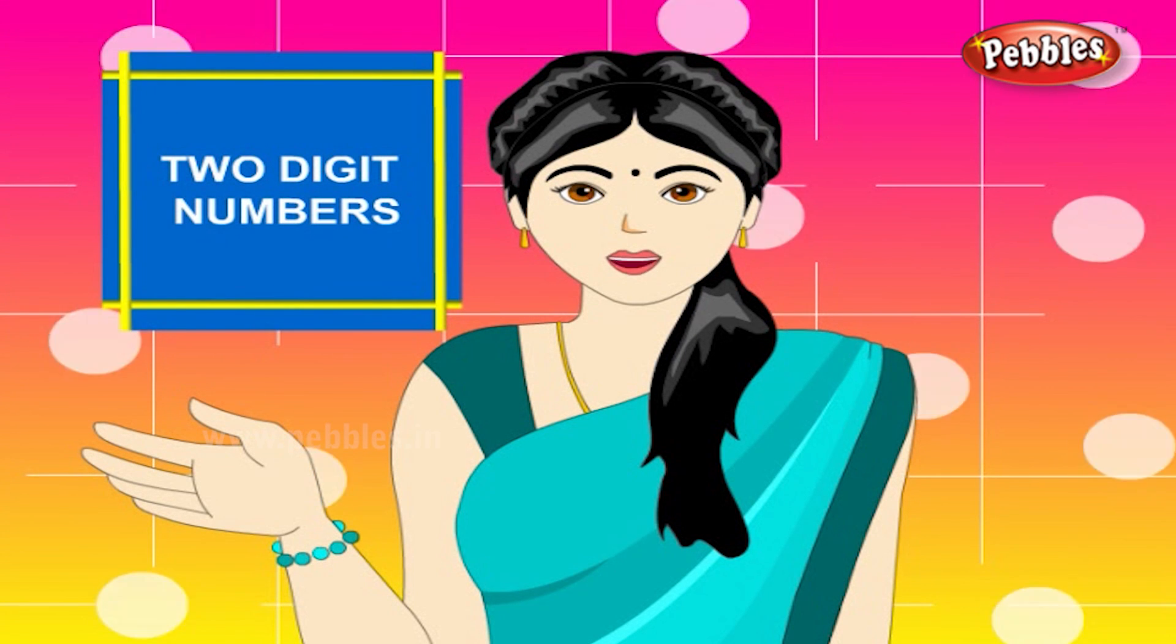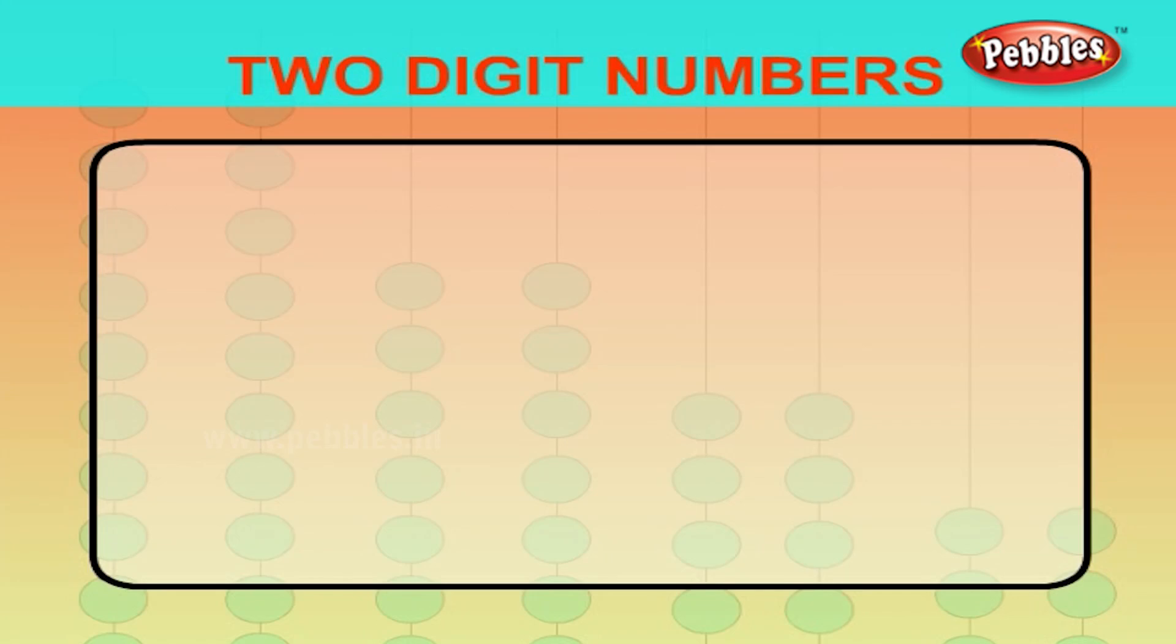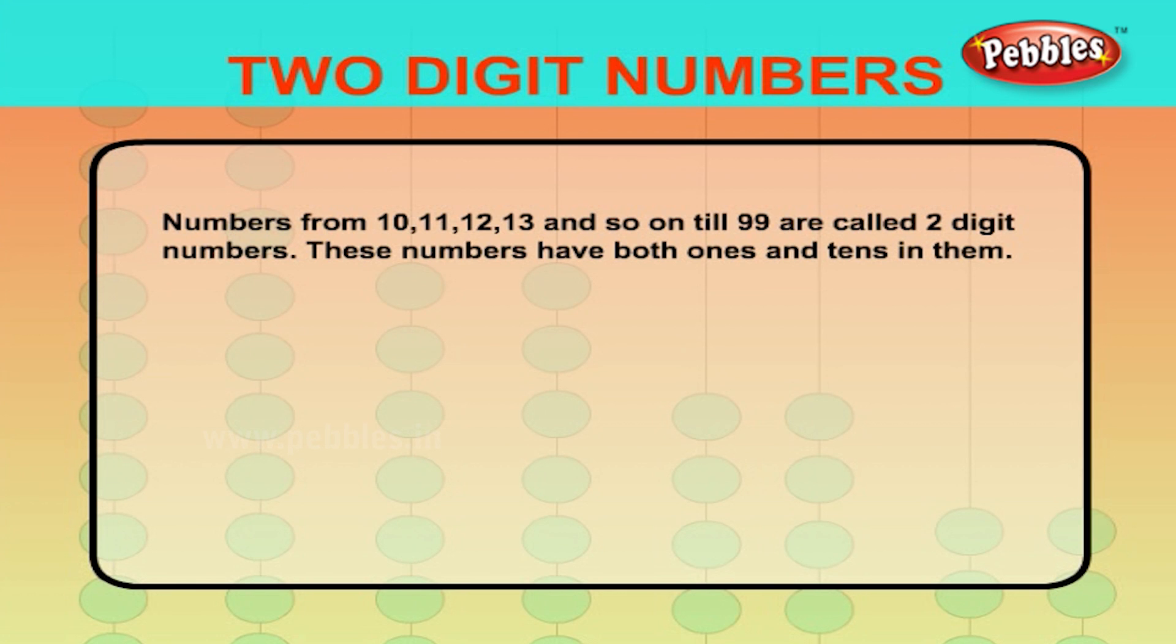Two-Digit Numbers. Numbers from 10, 11, 12, 13 and so on till 99 are called two-digit numbers. These numbers have both 1s and 10s in them.